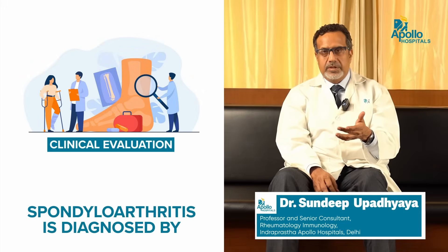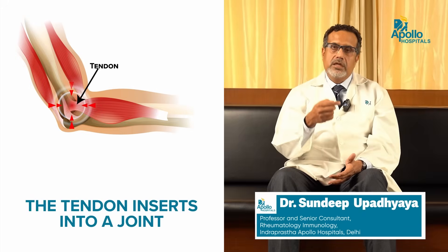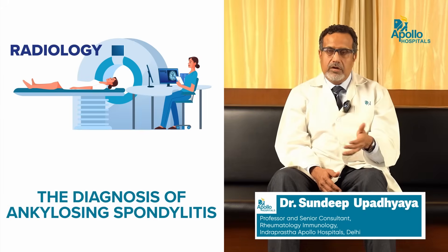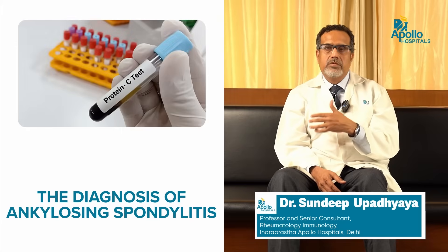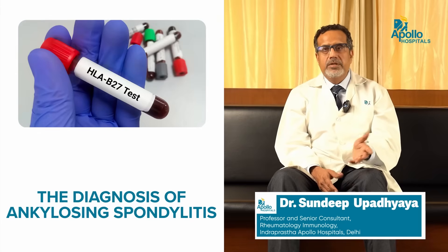AS or spondyloarthritis is diagnosed based on a clinical evaluation of the patient. That evaluation includes history taking, a discussion with the patient, and a physical examination. The examination typically yields stiffness and reduced mobility of the spine, arthritis in a few places, and enthesial inflammation where the tendon inserts onto a joint or spinal structure. Diagnosis is confirmed by radiology — a simple x-ray or an MRI — along with C-reactive protein, hemograms, and the HLA-B27 blood test.